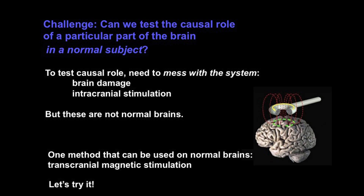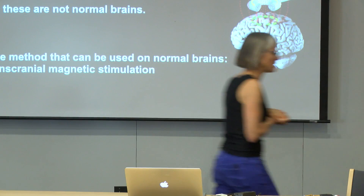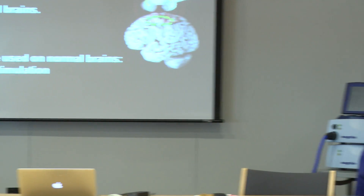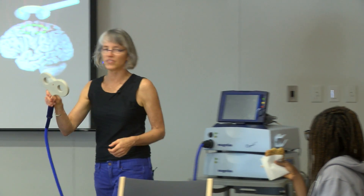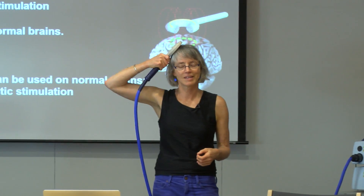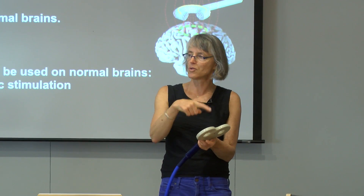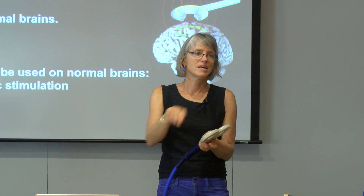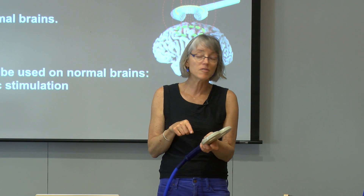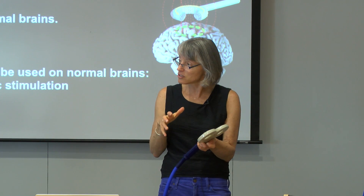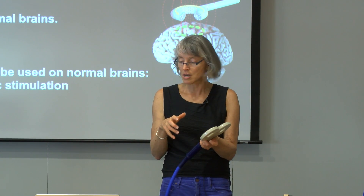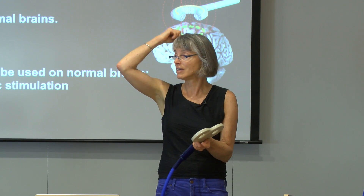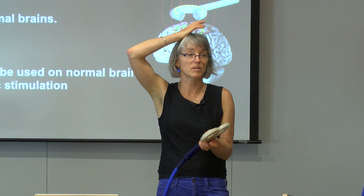In transcranial magnetic stimulation, you take a coil like this one here, and you stick it next to the head, and you run a current through the coil. The current makes a brief magnetic field change, and that brief magnetic field change affects neural activity in the region underneath the coil.